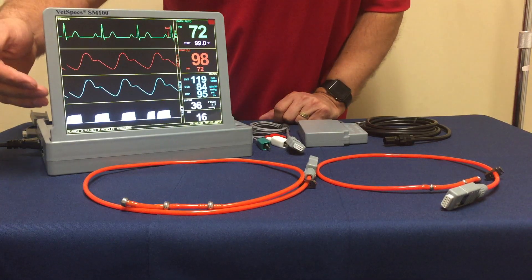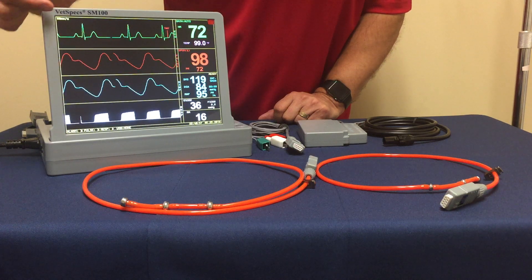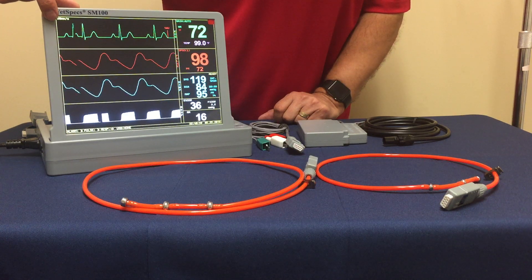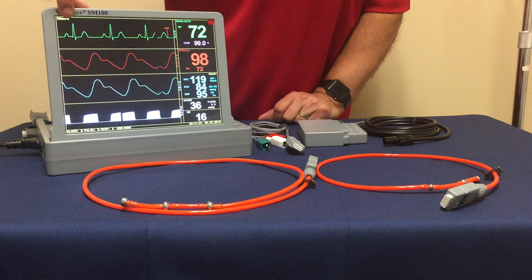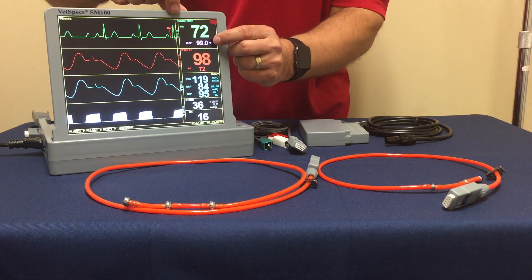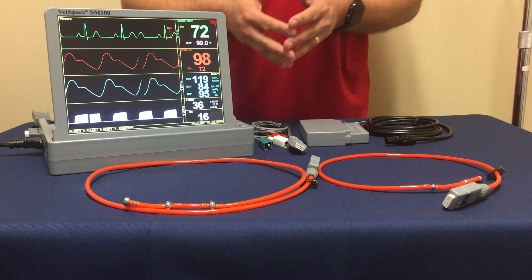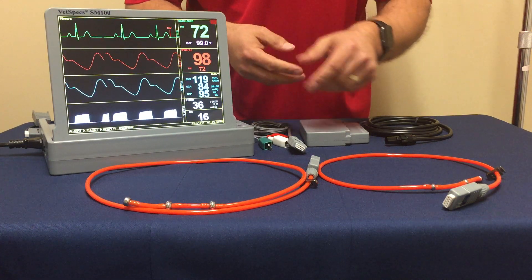If you could take a look and focus your attention on the SM100 monitoring display, we're going to be looking mostly at the top channel or waveform, your ECG, heart rate, and then the core body temperature. All this information is offered by the esophageal probe when inserted into the esophagus.